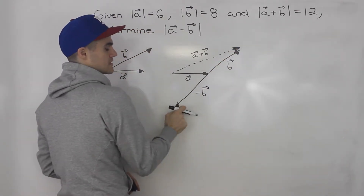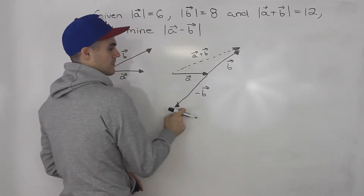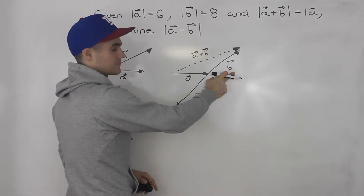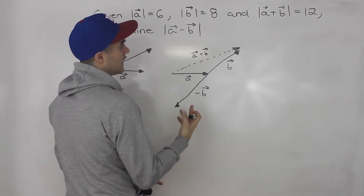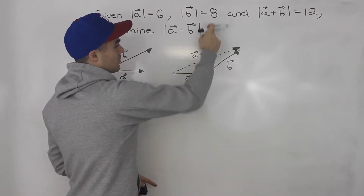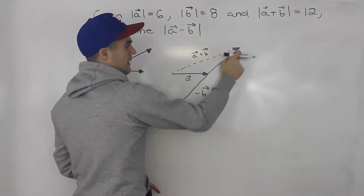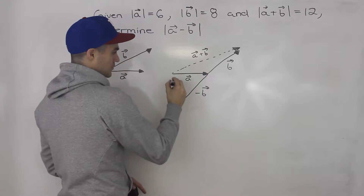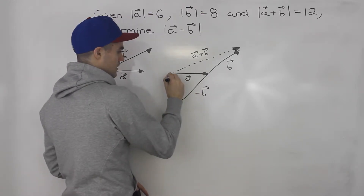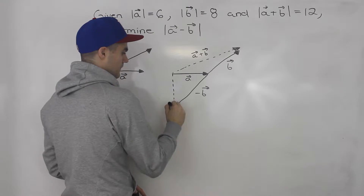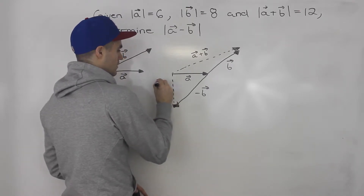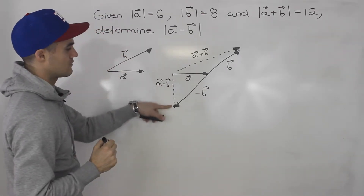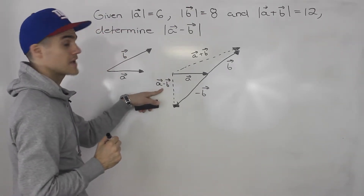This is positive b, this is minus b. This vector has the same magnitude as vector b — it's basically the same vector, just in the opposite direction, so the magnitude is the same. The length of this side is 8, and the magnitude of this vector is 8 as well. So the resultant vector a minus b, if we draw it, is right here. Ultimately, we want to find the magnitude of this vector a minus b.